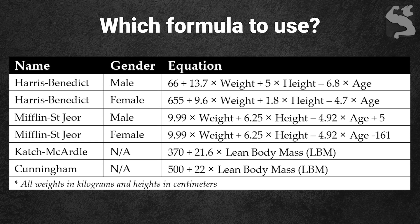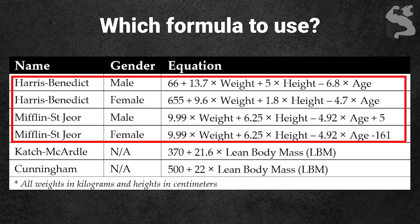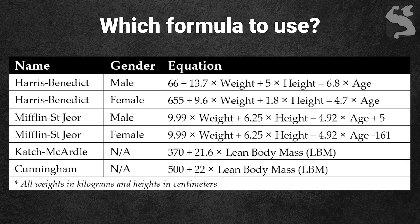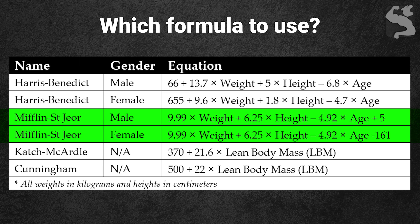The question is which formula should you use. The Mifflin St-Jeor and Harris-Benedict equations are based on your body weight and do not consider lean body composition. The Katch-McArdle and Cunningham equations are based on lean body mass and are used for athletic clients with significantly higher muscle mass — they are not accurate for average or obese individuals. Since research has proven better accuracy for the Mifflin St-Jeor equation, it is best to use it to estimate your BMR.